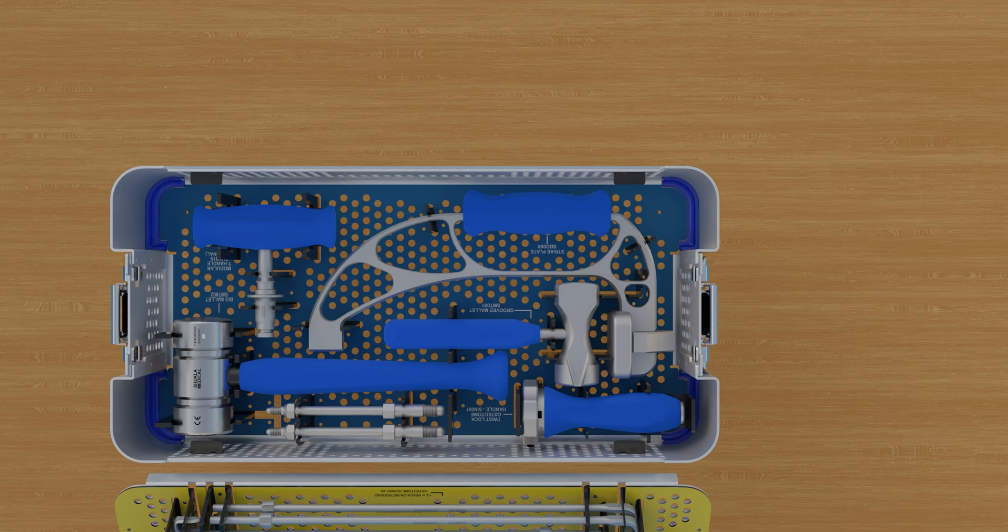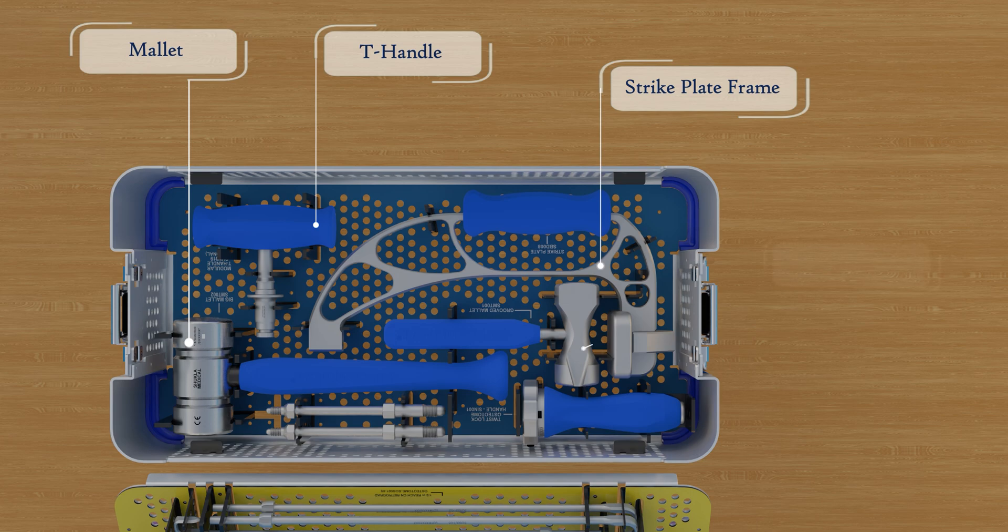Additional key components include the mallet, T-handle, strike plate frame, grooved mallet, and the twist lock osteotome handle.